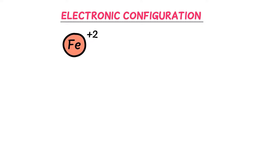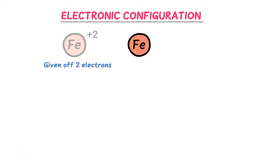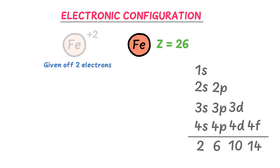Now let me teach you the electronic configuration of positive ions, like Fe²⁺. Fe²⁺ means the iron atom has lost 2 electrons. Remember: always write the atomic number of the neutral atom when doing the electronic configuration of positive ions, and forget about the charge for a while. The atomic number of iron is 26.